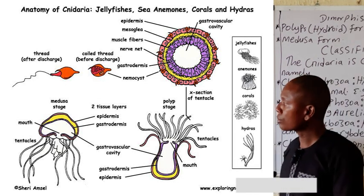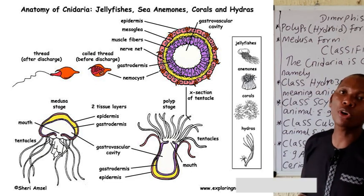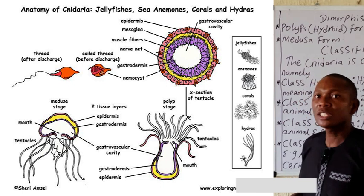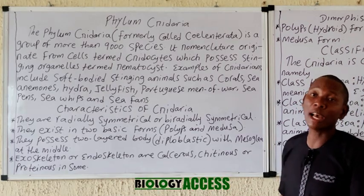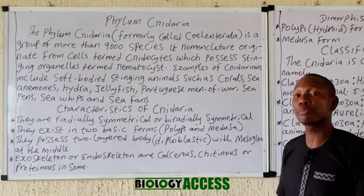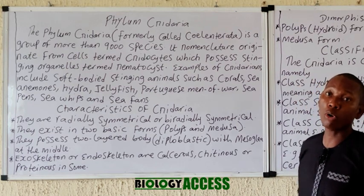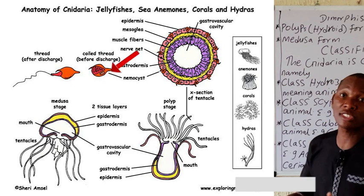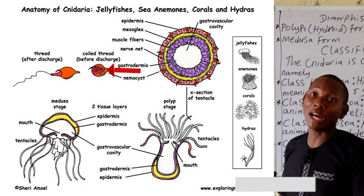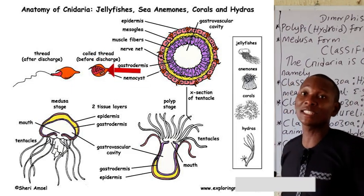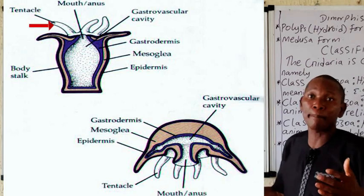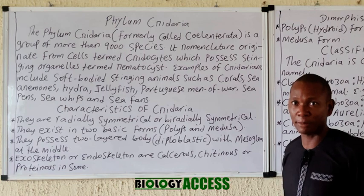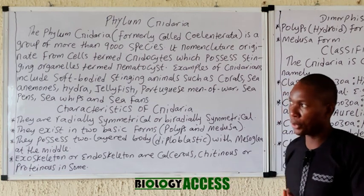Reproduction in these organisms may be sexual or asexual. In sexual reproduction they produce gametes, while in asexual reproduction they may reproduce through the process of budding. They possess nematocysts, which are stinging organelles used for attack and in some cases defense. The tentacles they possess guide food toward the oral cavity or opening, helping them capture their prey.